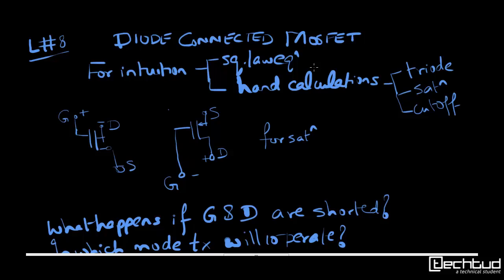For intuition we need to understand square law equations and hand calculations. From seeing the device you should be able to figure out whether it is in the triode, saturation or cutoff mode.